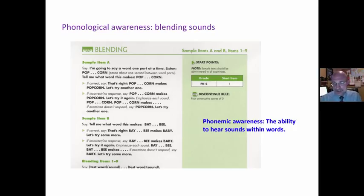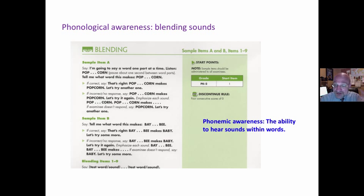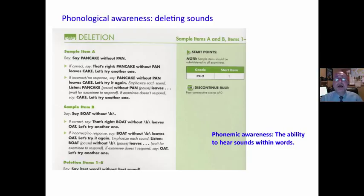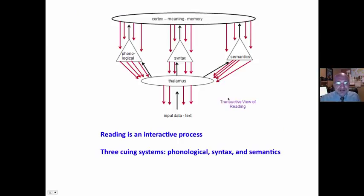Blending sounds: the ability to hear sounds within words. 'I'm going to say one part of the word — Pop. Corn. Tell me what word makes popcorn.' Deleting sounds: 'Say pancake without pan. What do you get?' This is the ability to hear sounds within words, but is it related to creating meaning with print? It focuses on just one aspect of the phonological cueing system — just a little part of the triangle. Reading is an interactive process — it ignores the other two cueing systems.